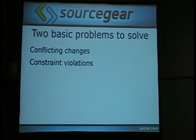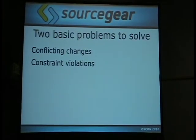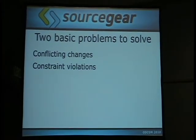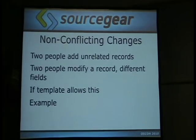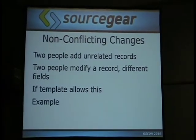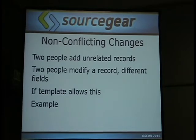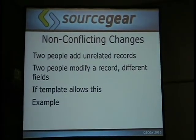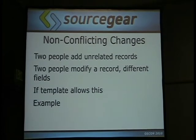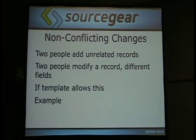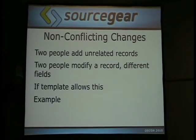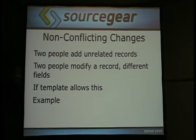When you merge a database you've got two problems to solve: conflicting changes and constraint violations. I'll talk about these separately — conflicting changes first. But first, let's mention non-conflicting changes, which aren't hard. Two people have a different record — just keep both records. Two people modify a record's different fields. You can define the template to allow that, and we're good.